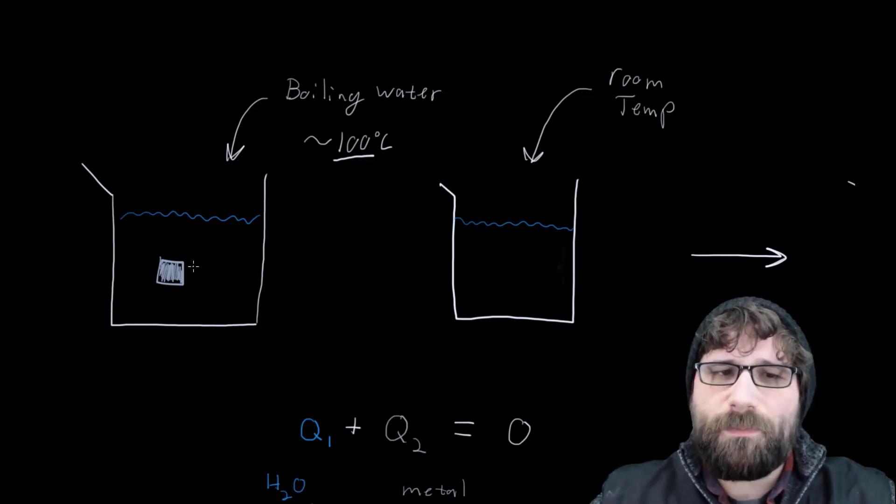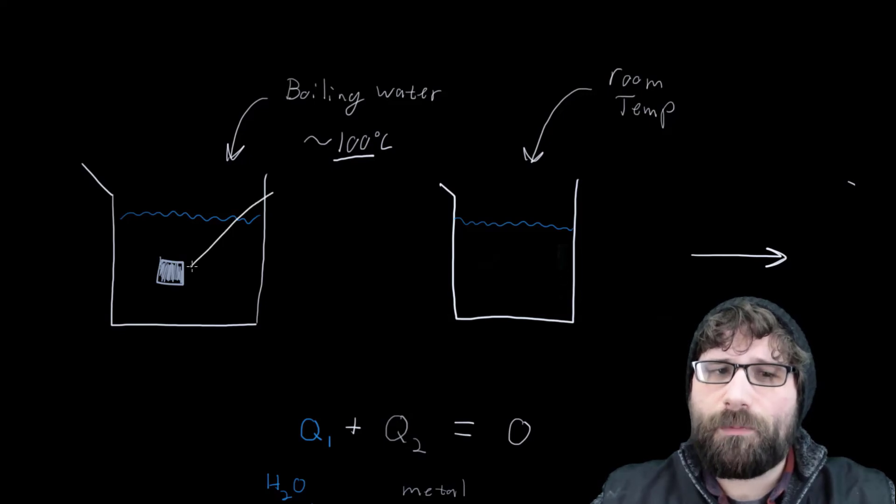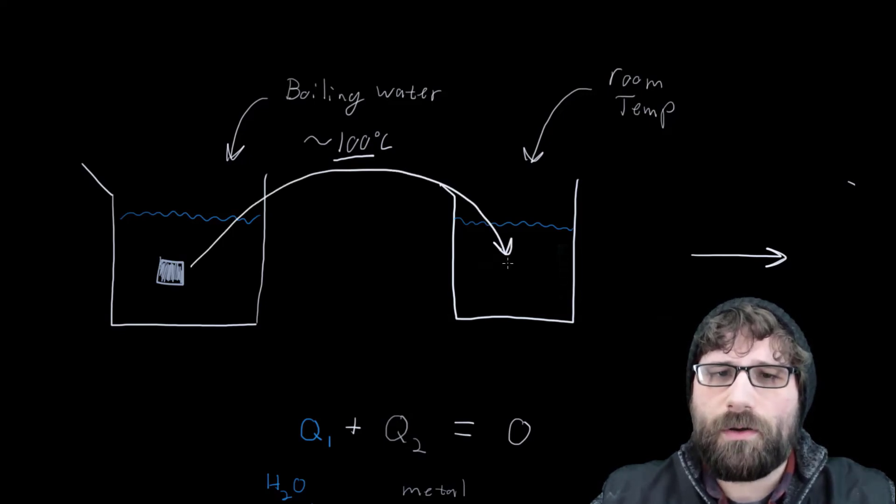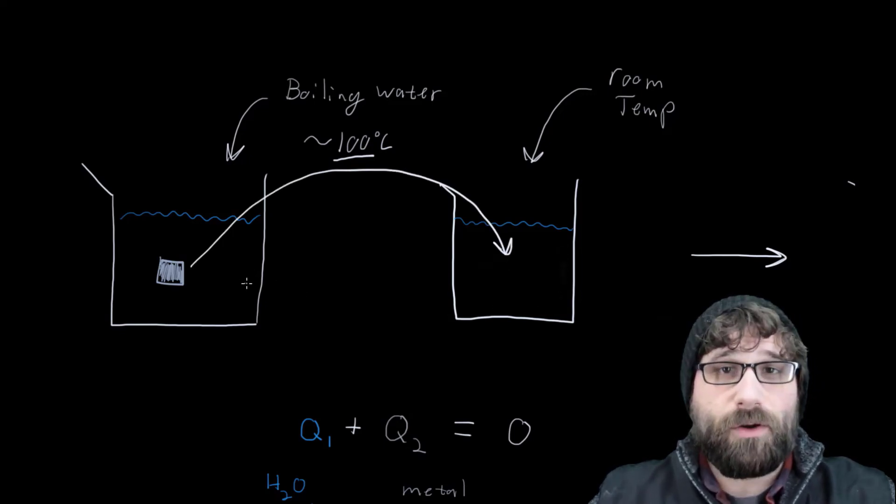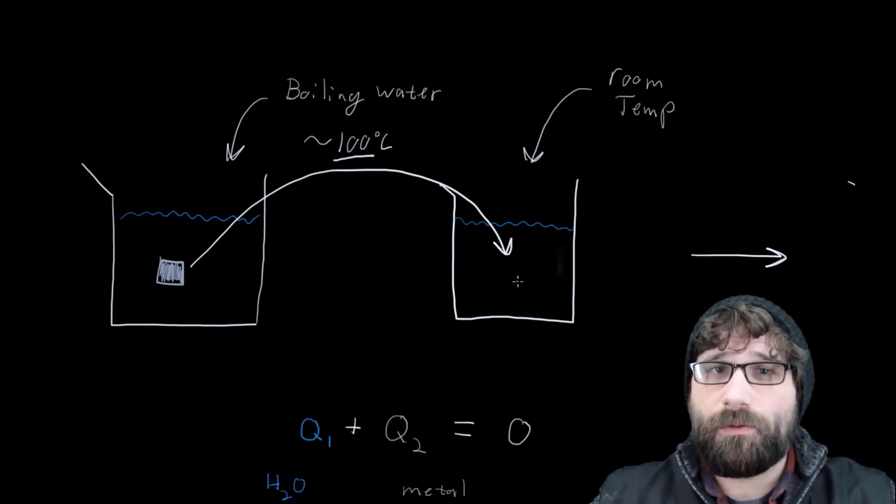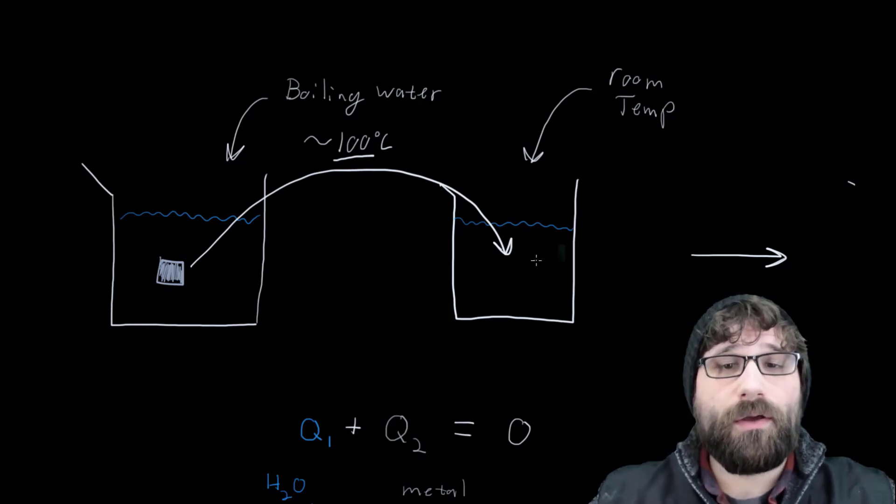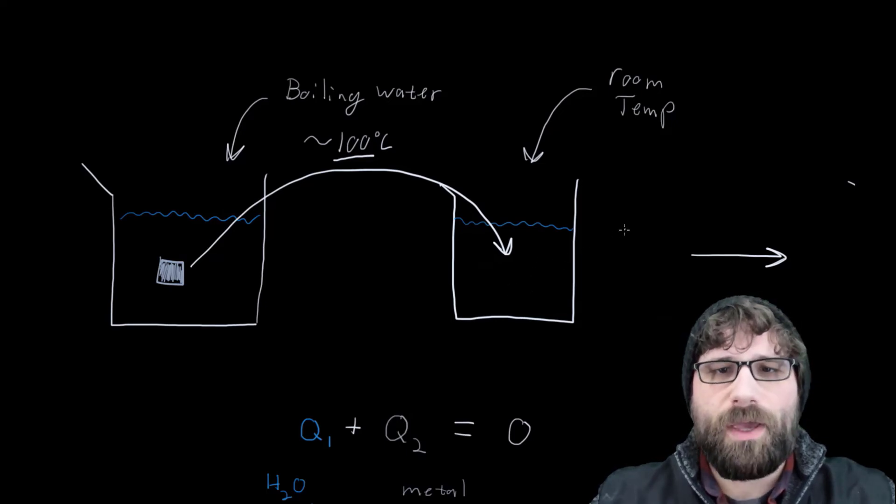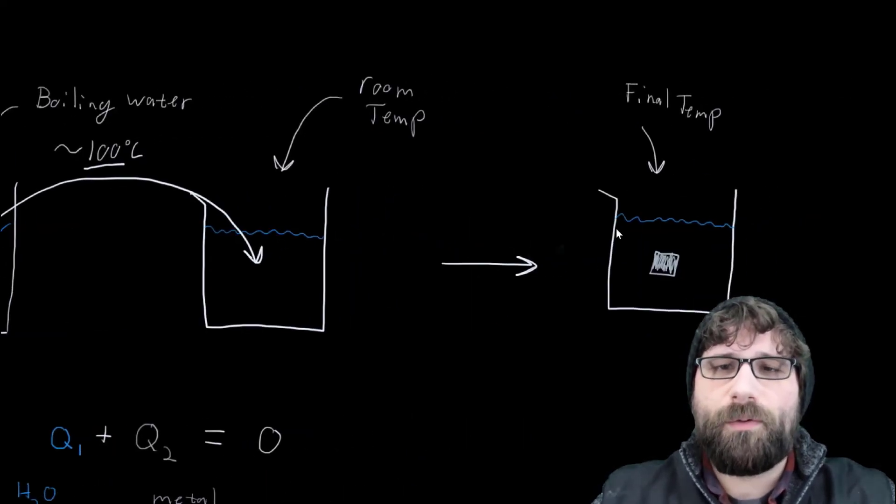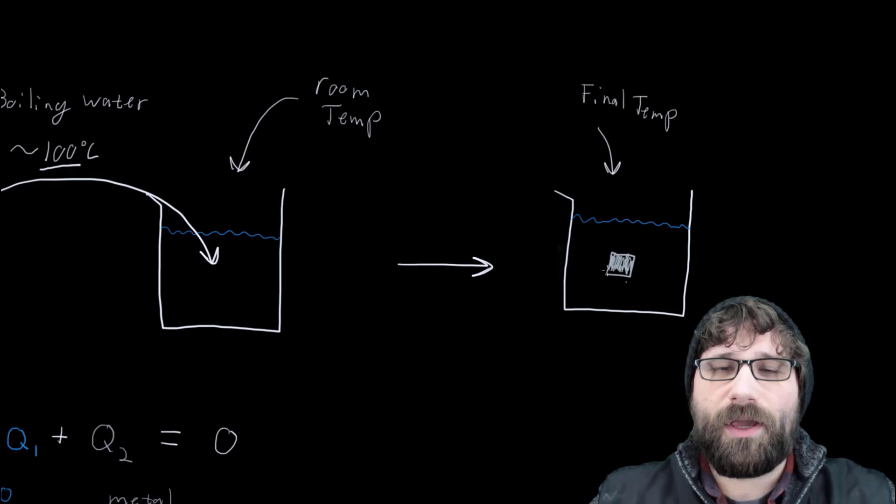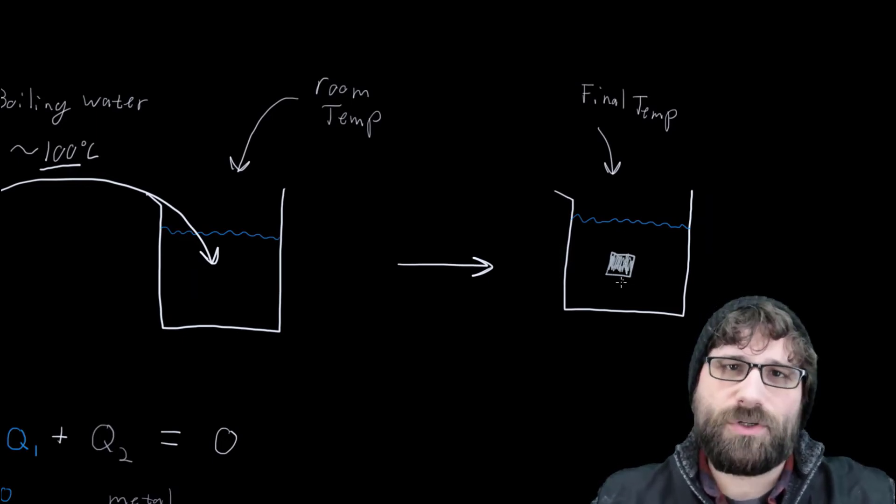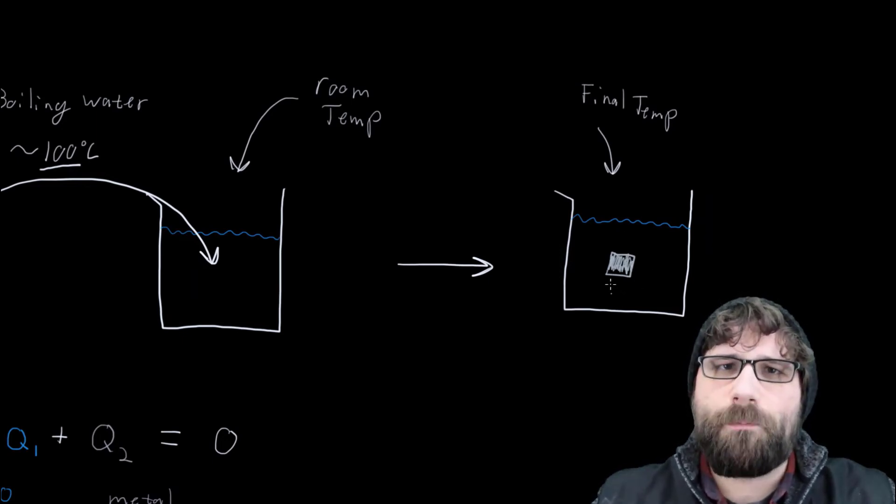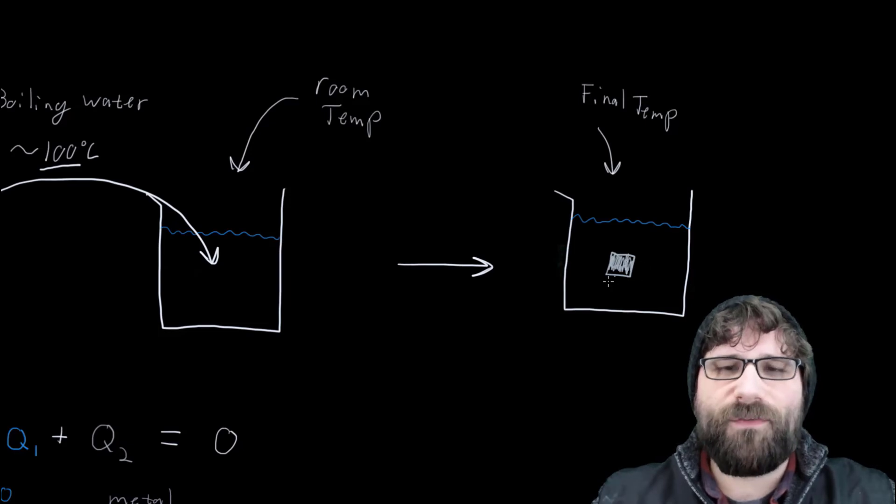And then we're going to take that piece of metal that's at 100 degrees, and we're going to put it into room temperature water. The metal will give some of its energy to the water and it will cool down. The water will receive some of that energy and it will heat up and we'll get a thermal equilibrium where the piece of metal and our water will be at the same temperature. So that's why we're going to measure the peak temperature of that final water.